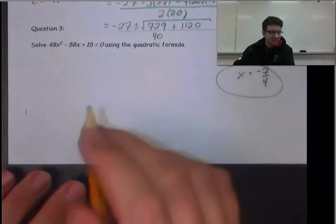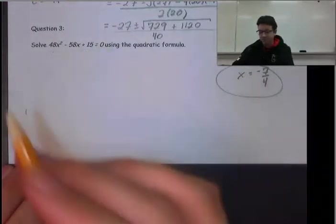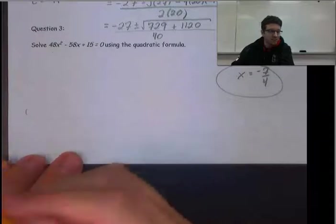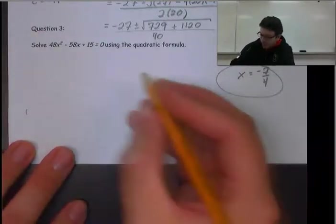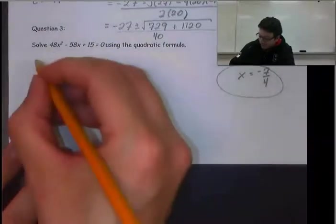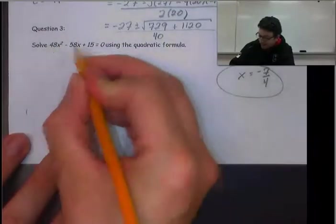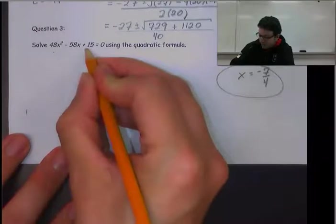Our third example, again huge numbers just to show you that you might not choose to factor this one. You might want to use the quadratic formula. This one we don't have to rearrange. So a is 48, b is -58, and c is 15.